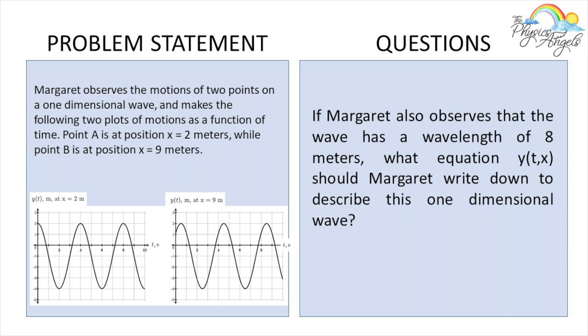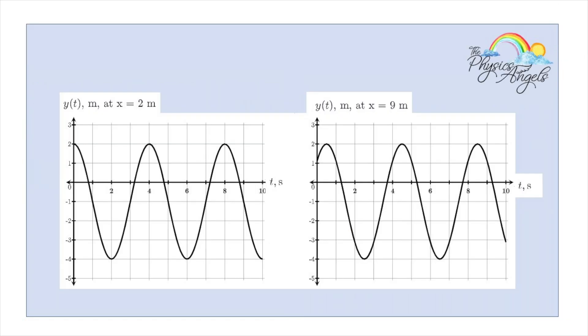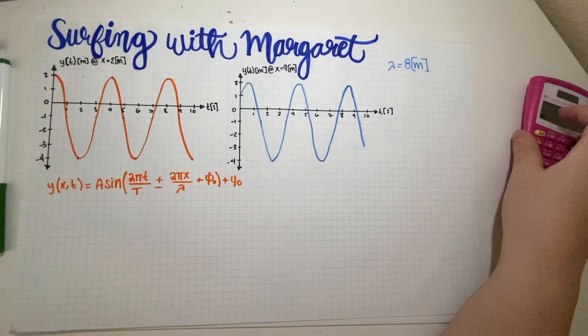So the problem: Margaret observes the motions of two points in a one-dimensional wave and makes two plots of motion as a function of time. Point A is at position 2 meters, Point B is at position 9 meters. Margaret also observes that the wave has a wavelength of 8 meters. What equation should Margaret write down to describe this one-dimensional wave? I'll leave a bigger picture of both plots here — pause the video if you want to write them down.